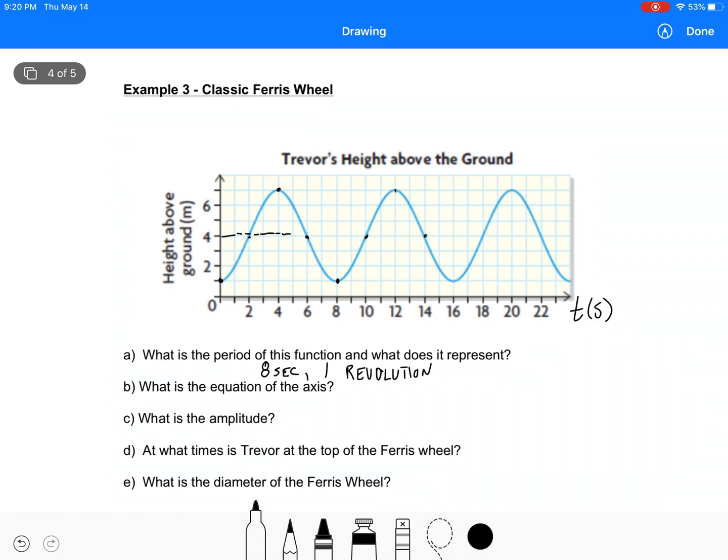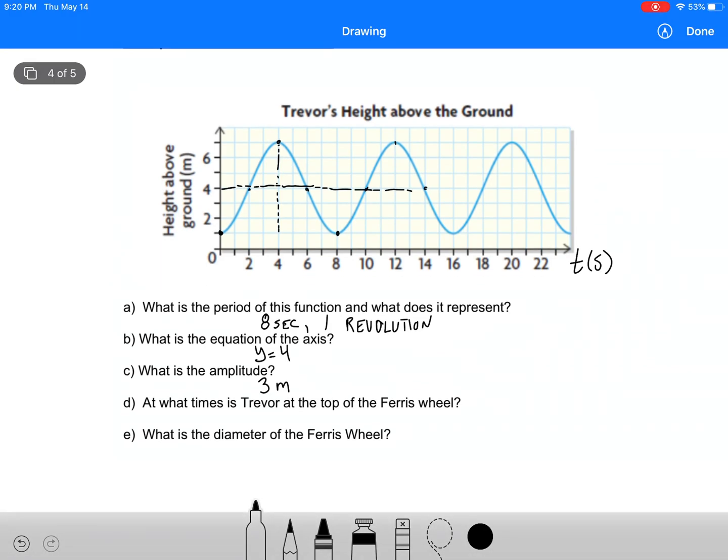What's the amplitude? Well, the amplitude, distance from the middle to the bottom or the middle to the top, it doesn't really matter, is going to give us 3. So 3 meters. At what times is Trevor at the top? Well, he's at the top at 4 seconds, 12 seconds. And what's that, 20? So 4, 12, and 20. And we'll just look, and this is all in seconds, we'll just look at the graph which is on the page here.